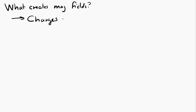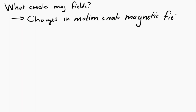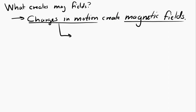So where do these magnetic fields come from? Magnetic fields are created by charges in motion. Charges in motion create magnetic fields. We've already seen charges in motion — if you have charges moving along a wire, we call that a current. So a current will create a magnetic field.